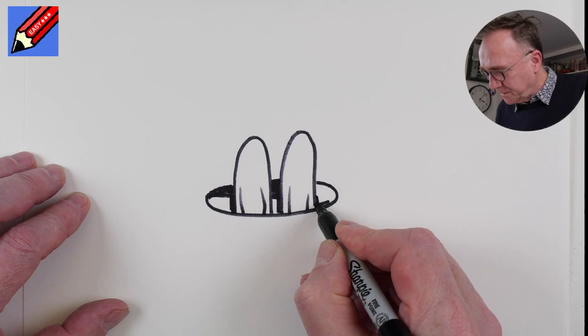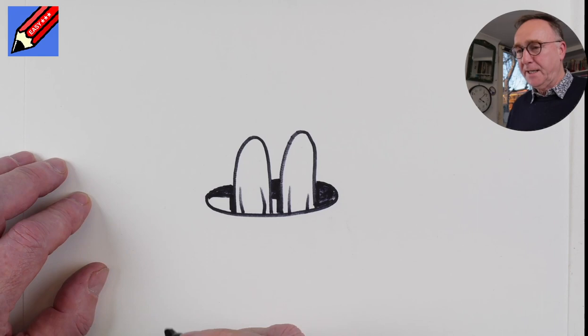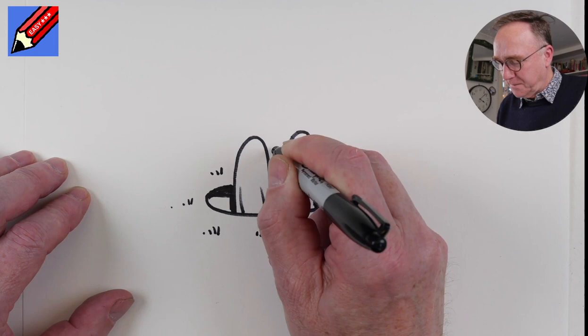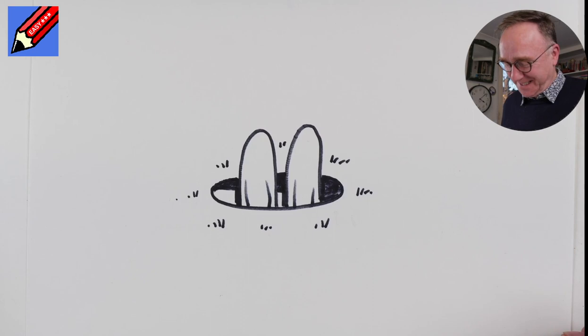And then we'll draw and fill in the hole. Just to show it's a rabbit hole, we'll have a little bit of grass so you know that it's a hole in the ground like that, maybe in there. And there you go, how to draw a rabbit hole.